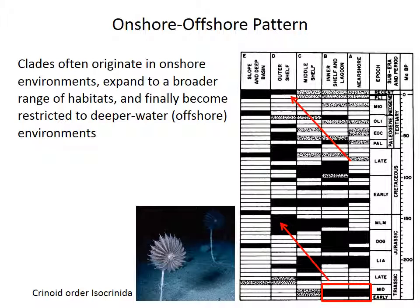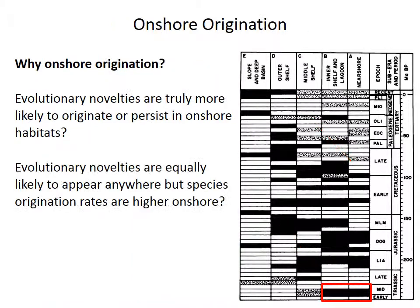This type of onshore-to-offshore pattern seems to be pretty common among a variety of groups, but it raises a couple of largely unanswered questions. Question one: why do higher-level groups like orders or families originate more often in onshore habitats? Higher-level clades like a family or an order should in theory be characterized by more significant evolutionary novelties. Perhaps those novelties are more likely to occur in shallow water habitats, or alternatively, maybe novelties can occur everywhere but origination rates are higher onshore — or there are simply more species in shallow water to produce novelties, kind of like a million monkeys typing away at keyboards to produce great literature.